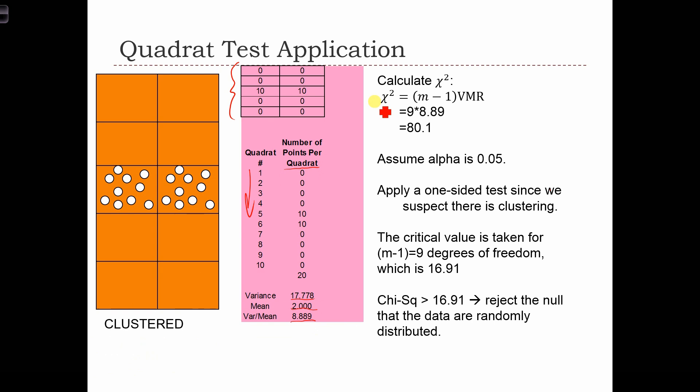and we calculate chi squared as m minus 1 times VMR. So we have 9 times the VMR, which equals 80.1.